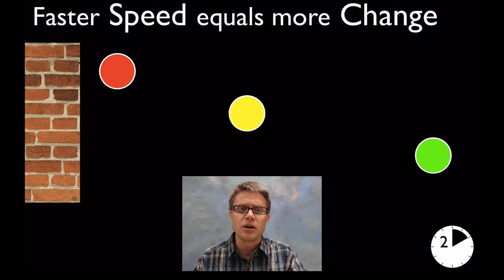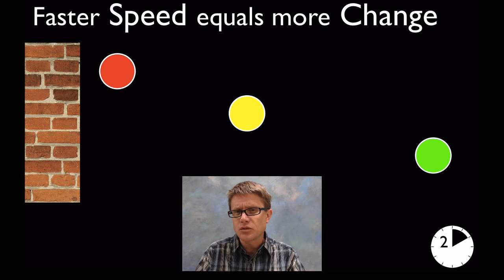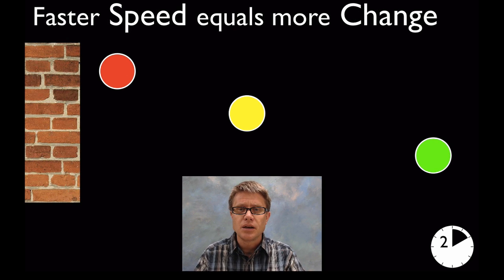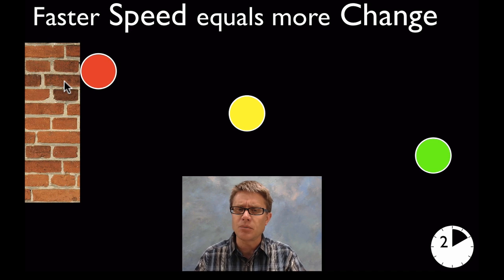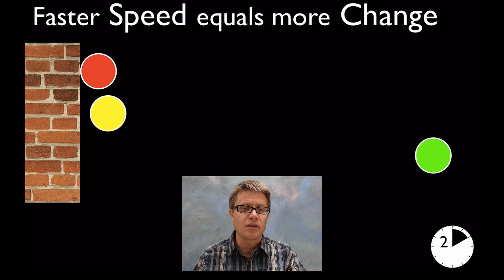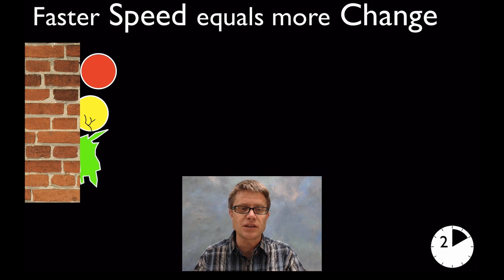Next thing that you should let them know is that the faster a speed when we have a collision equals more change. And so if we were to throw this red ball against a wall at a low speed, it's not going to damage it much. But if we throw it at a faster speed or even a faster speed we're going to have more change to that object.